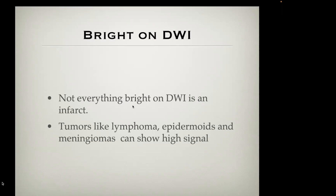Not everything that shows high signal on diffusion-weighted imaging is an infarct. Lymphoma commonly shows restricted diffusion — if you think about the histology of B-cell lymphoma with its dense packing of cells, the highly cellular nature limits the freedom of water. This restricted diffusion is also seen in some glial tumors and meningiomas. These are commonly bright on diffusion trace imaging.